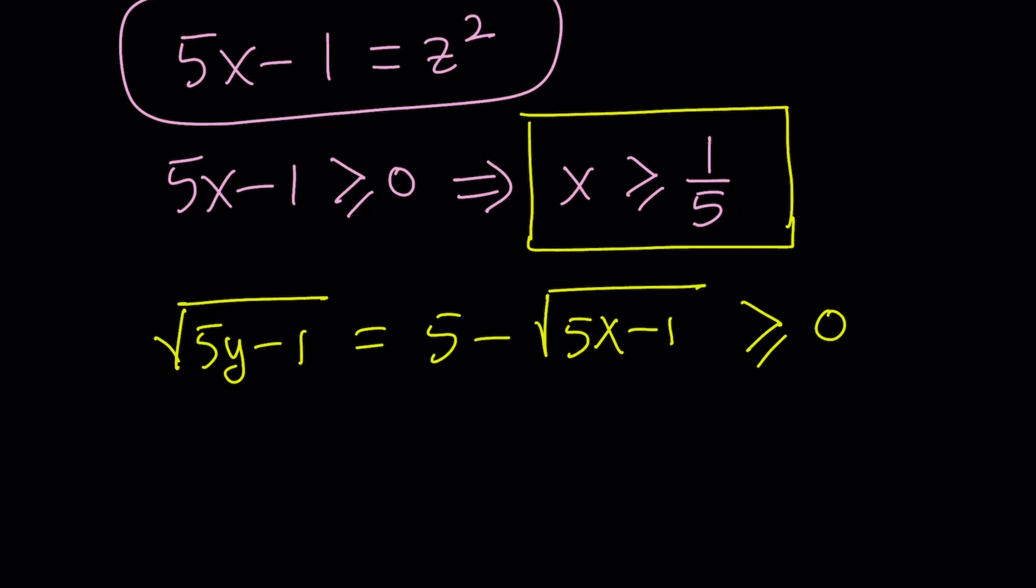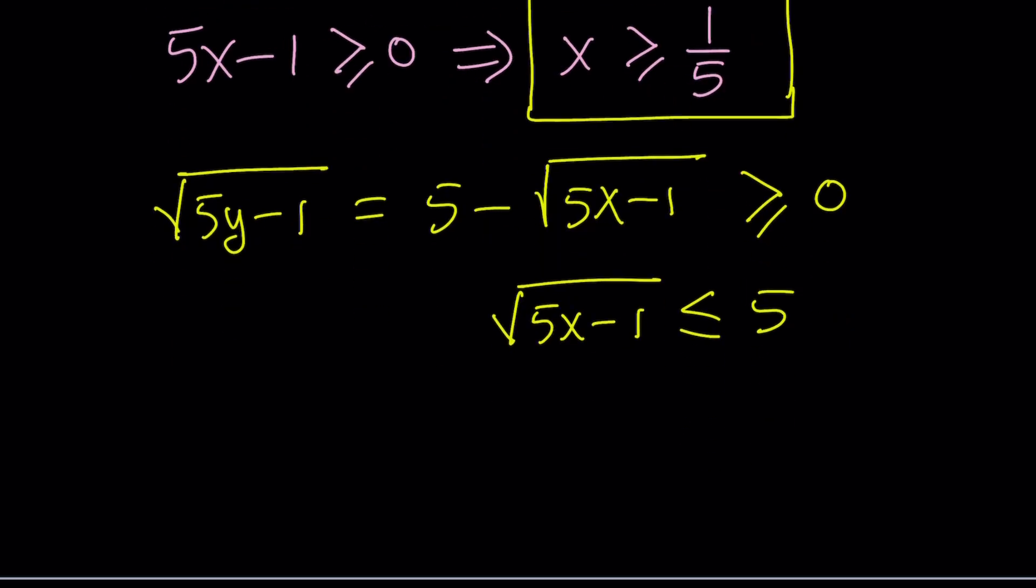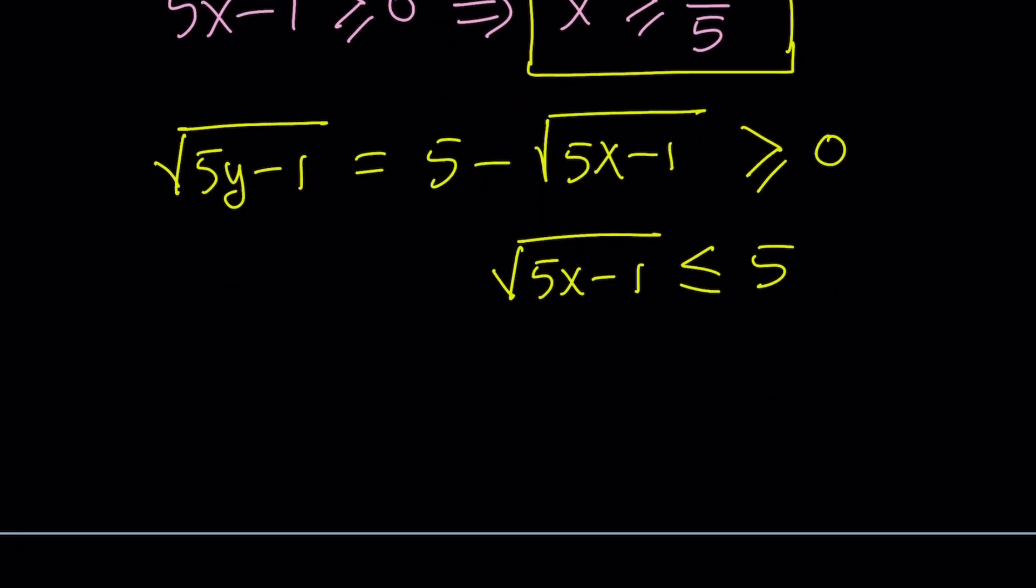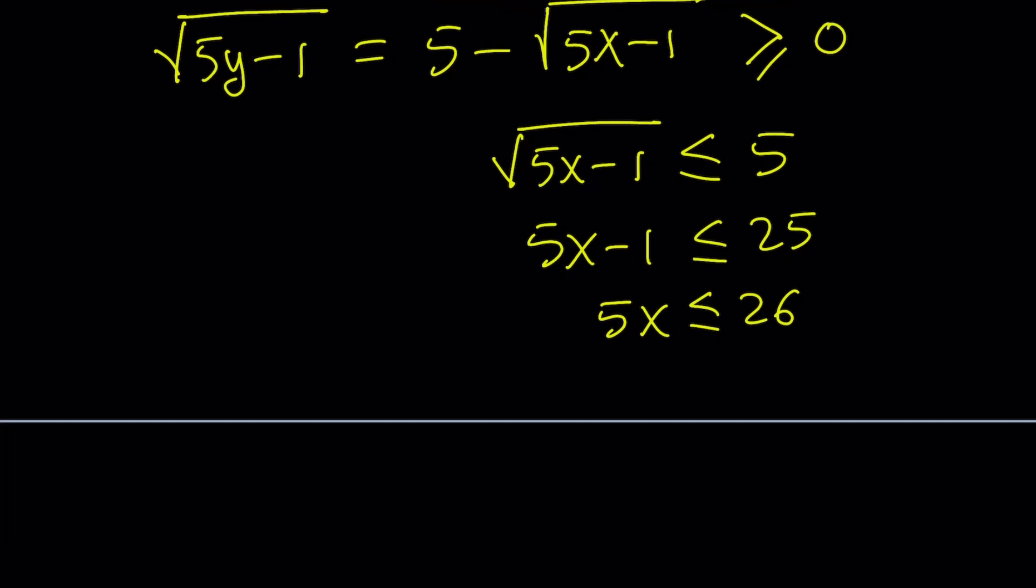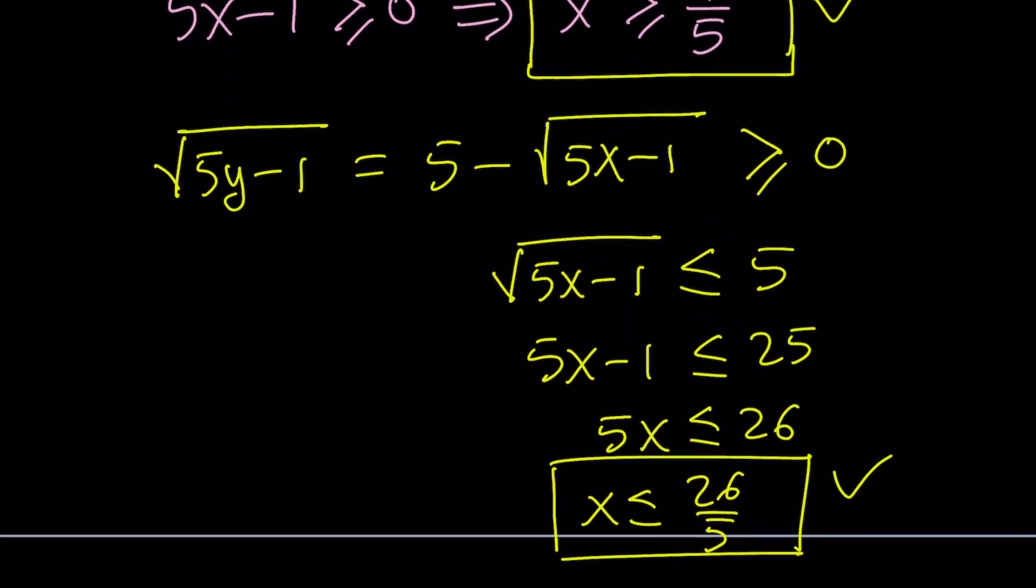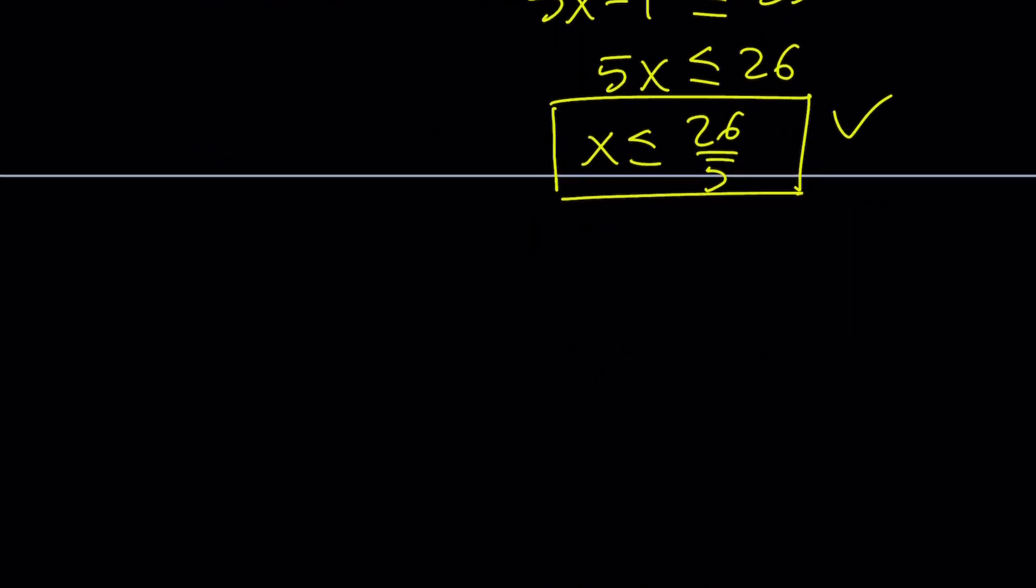So let's go ahead and put the radical on the right-hand side and flip side. Square root of 5x minus 1 is less than or equal to 5. Square both sides, you're going to get 5x minus 1 is less than or equal to 25. What am I getting at? I'm getting at finding another interval for x and now we're going to put it together because they have to intersect. Add 1 to both sides. And then divide both sides by 5.